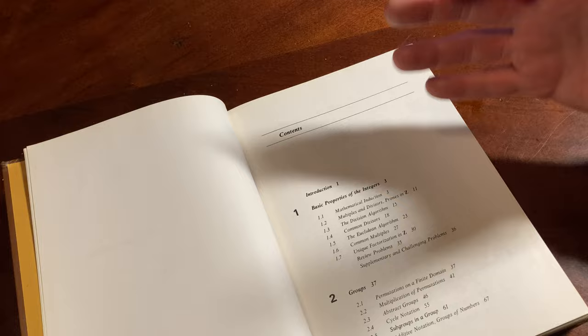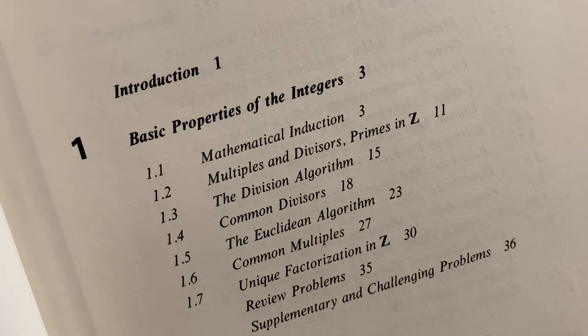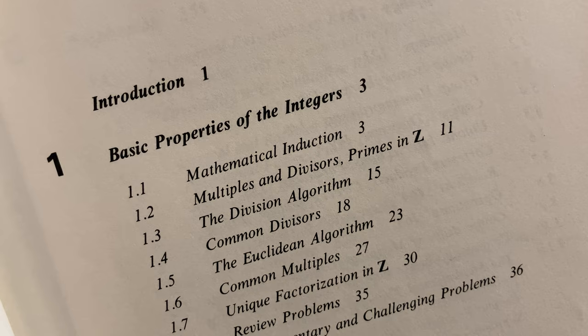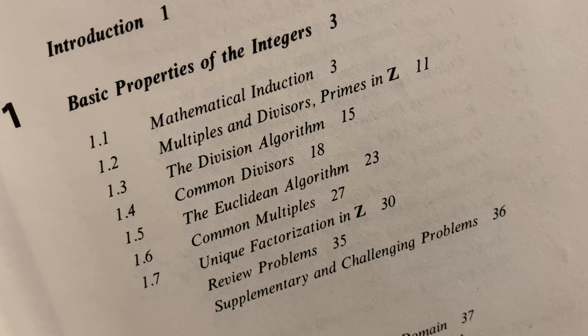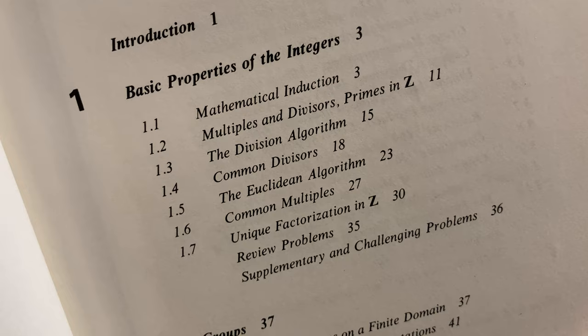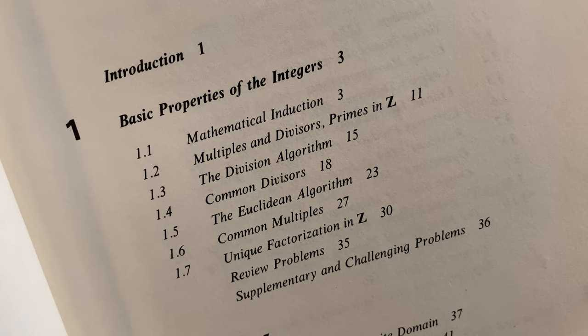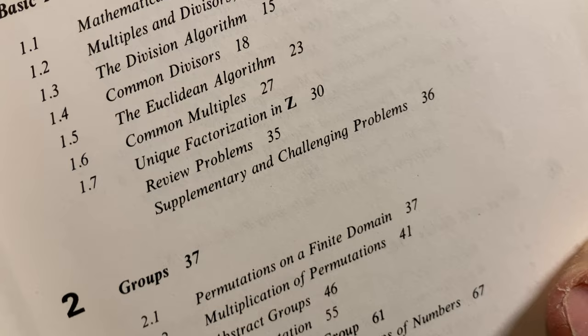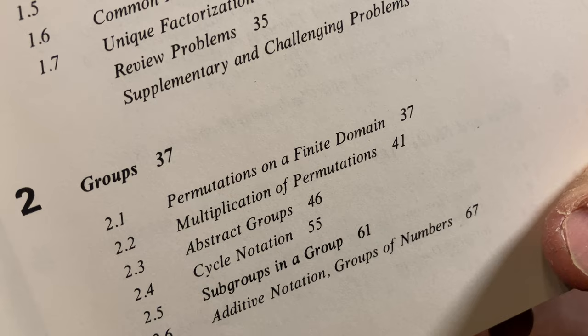Basic Properties of the Integers. That's the first chapter. Some induction, multiples and divisors, primes in Z, the division algorithm, common divisors, the Euclidean algorithm, common multiples. So these are things you could learn. Groups, permutations on a finite domain, multiplication of permutations, abstract groups, cycle notation, subgroups.